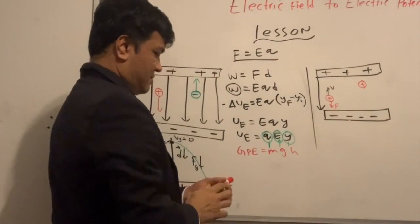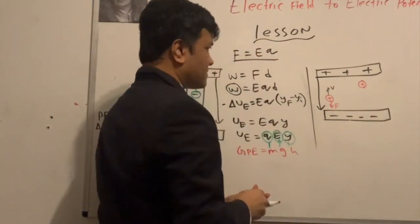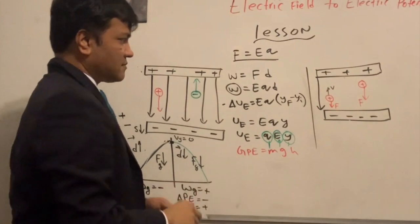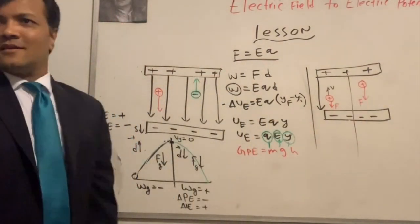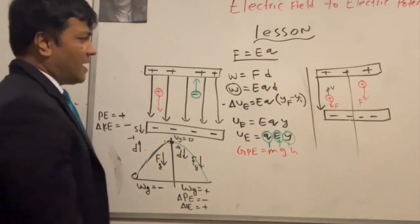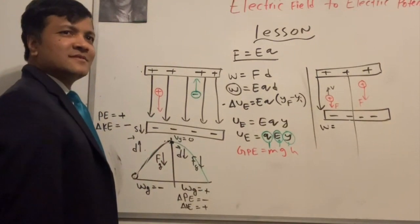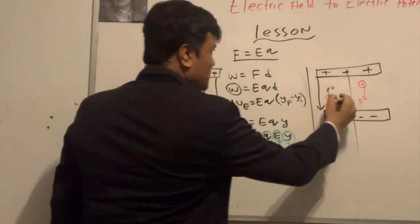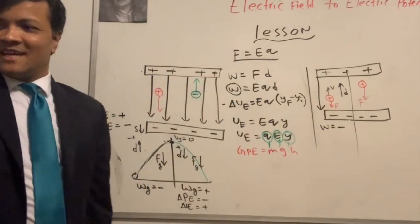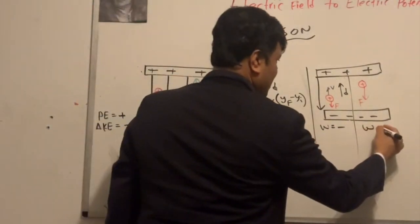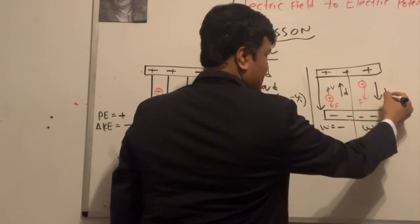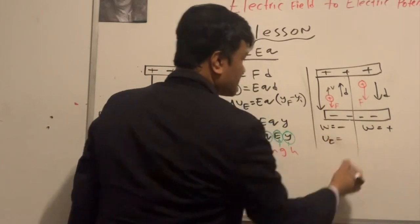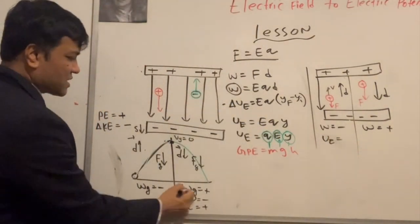At the maximum point, velocity is zero, then it changes direction and comes back down — force still pointing downward. On the way up, displacement is opposite to force, so work is negative. On the way down, displacement is in the same direction as force, so work is positive.